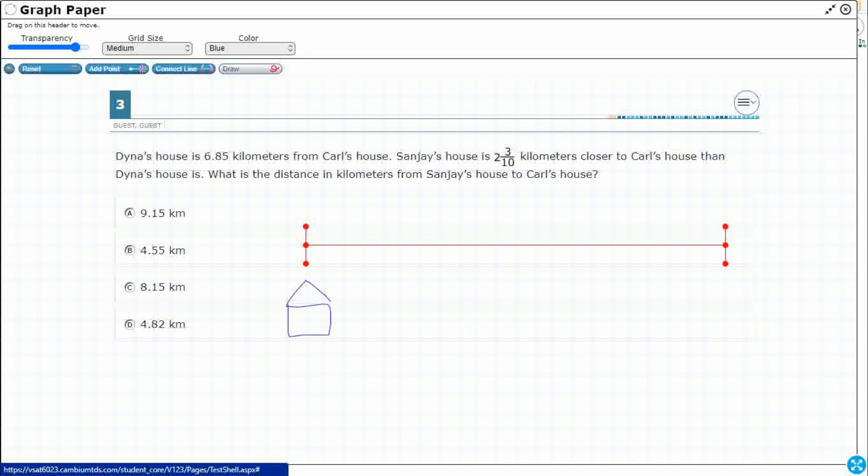So we've got a house right here. Okay, so this is Dinah's house. And then I've got Carl's house. And we know that these two, if we put them on a straight line, 6 and 85 hundredths.